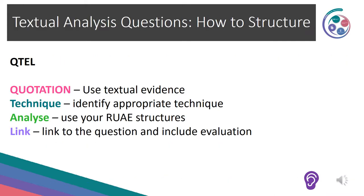Now that you've done some revision on Aunt Julia, we're going to think about how you should structure your textual analysis questions on the poem. I think the QTIL formula is a good one to remember. However, you might answer the questions in a more natural way — that's absolutely fine. If you did want to use this formula: first, provide your quotation — textual evidence from the poem; then identify the technique; analyse using your RUAE structures, for example if you're quoting imagery, 'just as... and so too'; then link your analysis to the question and include evaluation.